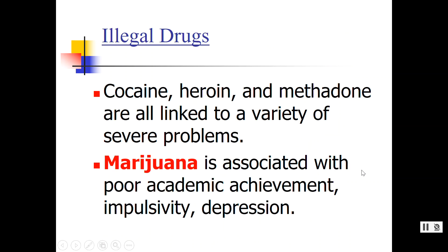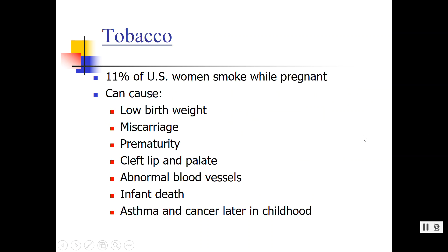Illegal drugs — and now legal drugs like marijuana, which isn't illegal everywhere — are associated many times with poor outcomes for the child when they're actually in middle childhood or adolescence; effects aren't typically seen in those first few years, but they have been observed. Cocaine, heroin, and methadone all lead to a variety of issues for a child once they're born.